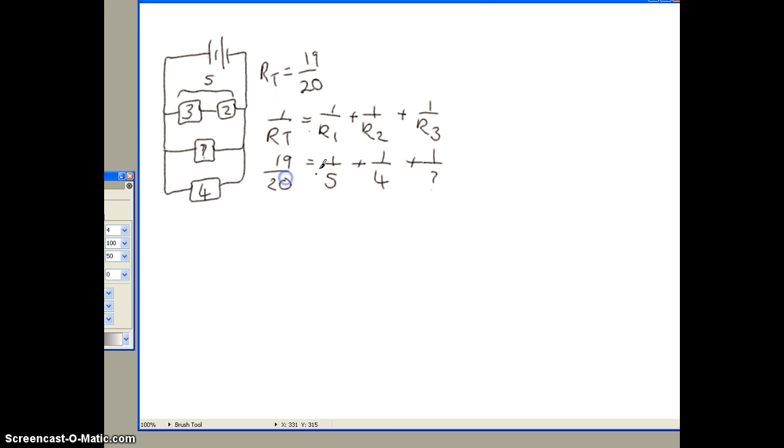So the first thing I'm going to do is add these two fractions together. And to add fractions, you require a common denominator. The easiest way to do this is just to multiply the two denominators together. So 5 times 4 is 20.